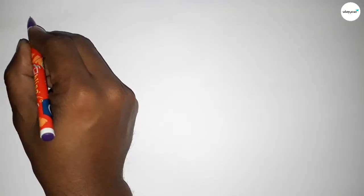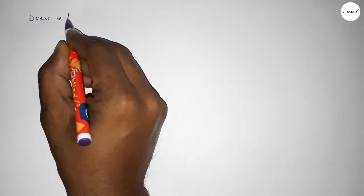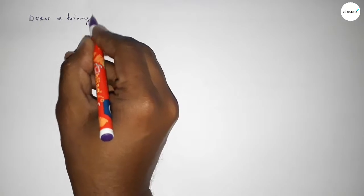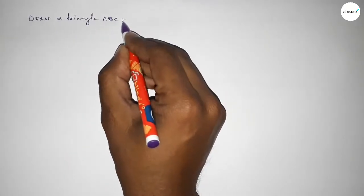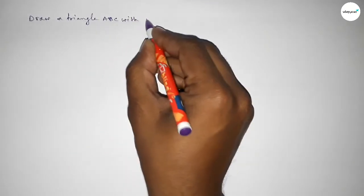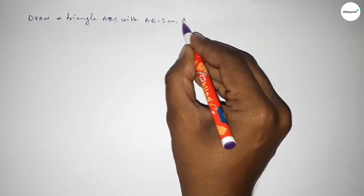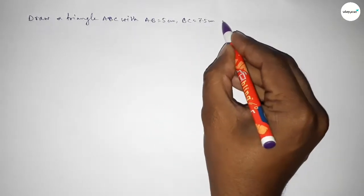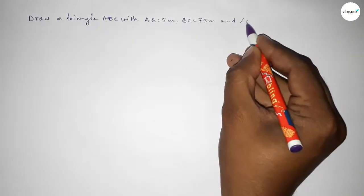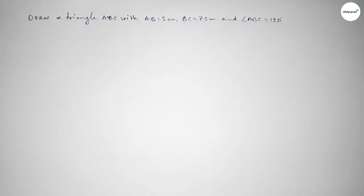Hi everyone, welcome to SI Share Classes. Today in this video we have to draw a triangle ABC with AB equal to 5 centimeter, BC equal to 7.5 centimeter, and angle ABC equal to 120 degrees. So let's start the video.